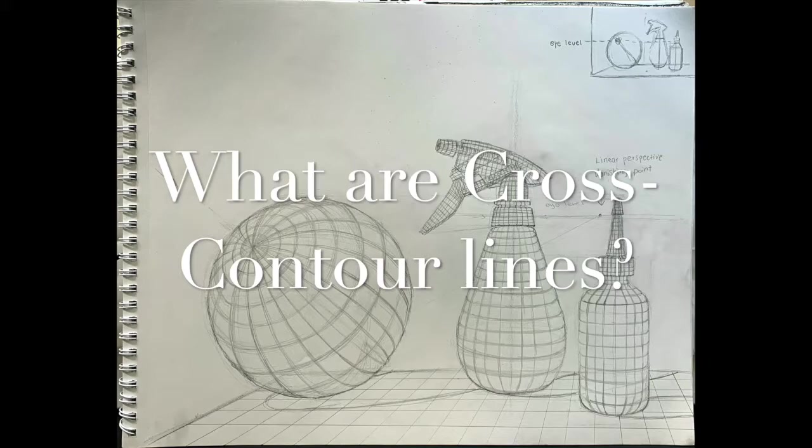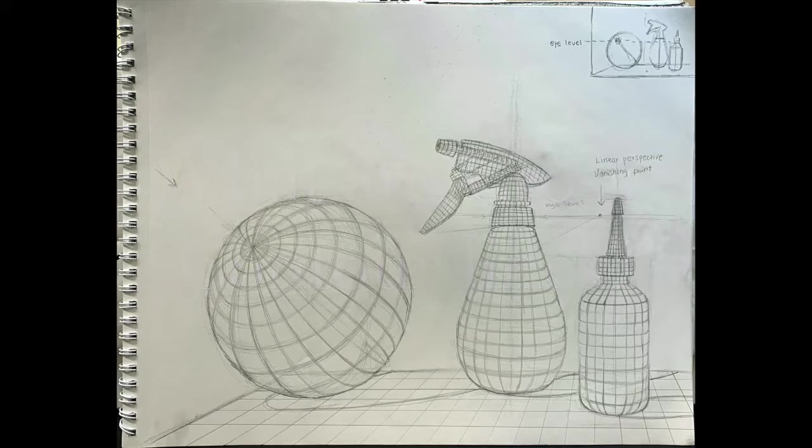It is different from outline and contour lines that we've been discussing before. An outline is a line of even thickness that exactly follows the outer edges of an object. Contour lines define the edges of a form and major divisions within it. Cross contour lines define the surface of a volume.